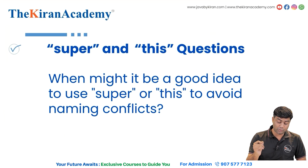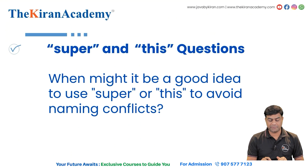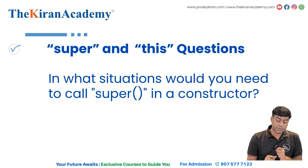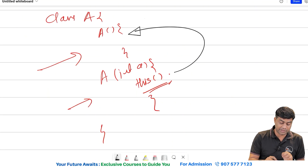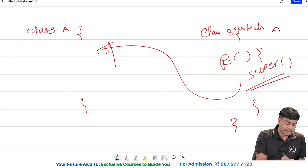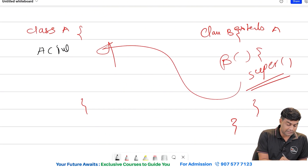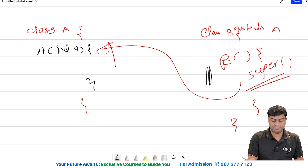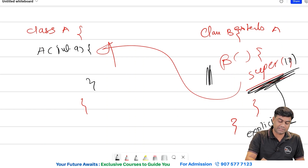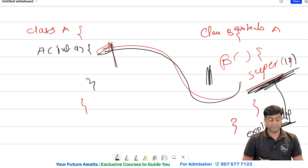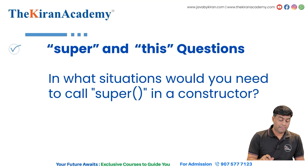When might it be a good idea to use 'super' to avoid naming conflicts? This is repeated from previous questions. Regarding when to call 'super' in a constructor explicitly — if the parent class constructor takes arguments, the default 'super()' auto-call will give an error. Therefore you need to pass those arguments manually and explicitly.